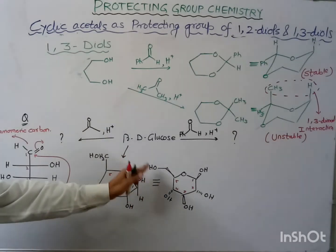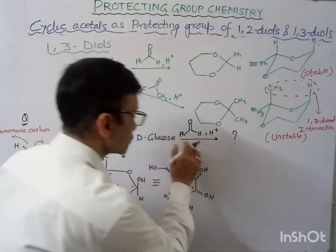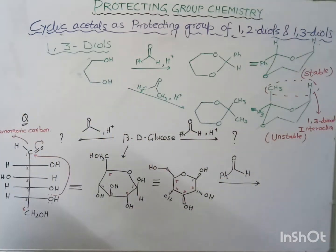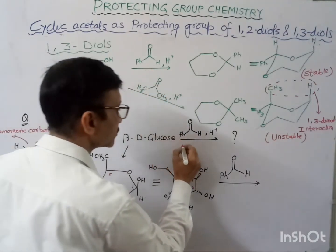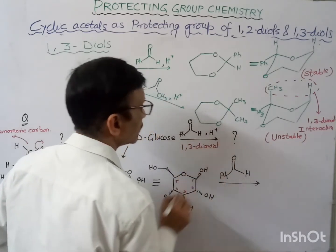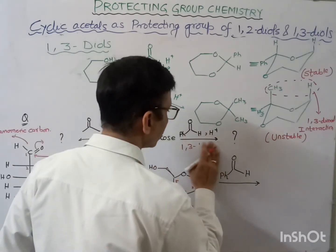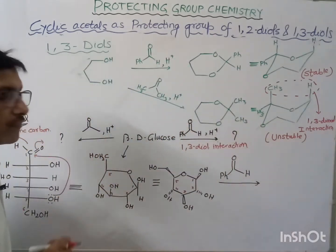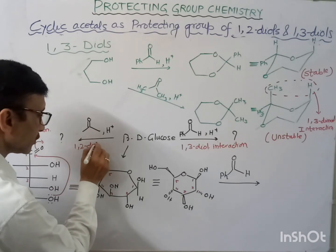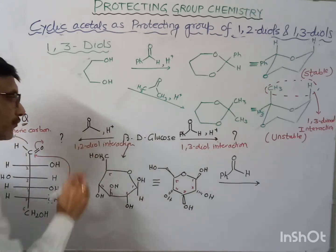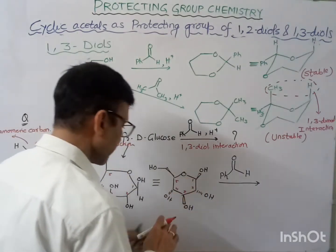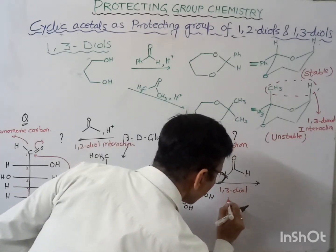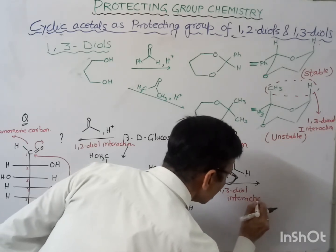Now if this beta-D-glucose reacts with benzaldehyde, a 1,3-diaxial interaction will occur. With benzaldehyde, 1,3-diaxial interaction takes place, whereas with acetone it is a 1,2-diaxial interaction, as I told in my previous lecture. So here we should look for the 1,3-diaxial positions.